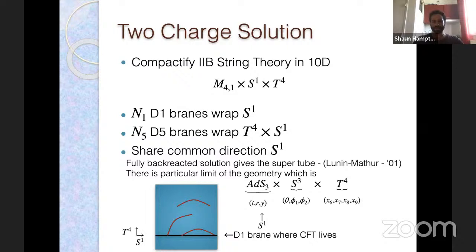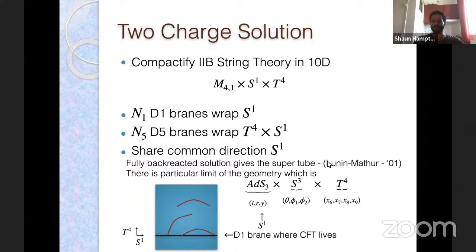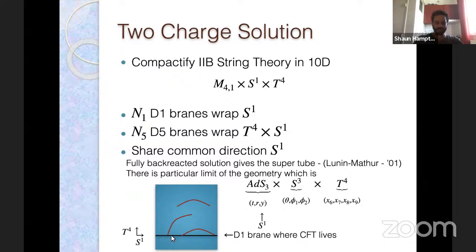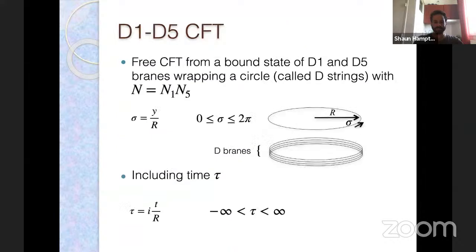The first scenario is the CFT dual of a probe in AdS, with this deformation turned on. Then we'll look at the CFT dual of a probe moving in a super strata geometry and look at the differences. This may help us isolate the tidal force. Let's begin with a quick summary of the two-charge solution. You compactify to get this four-plus-one manifold, a circle S¹ cross T⁴, and you wrap N₁ D1 branes around the S¹ and N₅ D5 branes around T⁴ cross S¹.